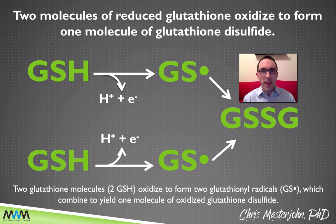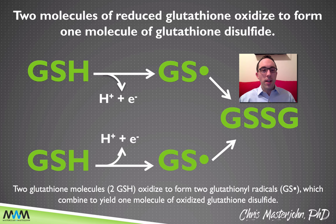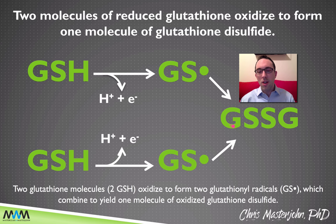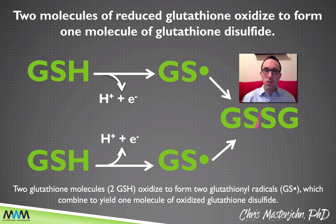When we saw ascorbic acid in the last lesson, we said that the ascorbyl radical has this unpaired electron, it's highly reactive, it needs to do something to get that electron paired up, and its solution was to donate another electron and become dehydroascorbate. The glutathionyl radical has the exact same problem — it's got to pair up that electron — but it has a different solution. Its solution is to pair up with a second glutathionyl radical to form GSSG.